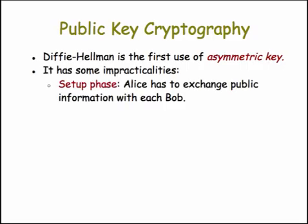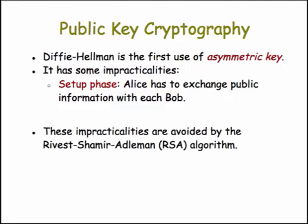It requires a setup phase in which Alice has to exchange some public information with Bob — not only with that Bob, but with any Bob she wishes to exchange a key with. These impracticalities are avoided by another algorithm: the Rivest-Shamir-Adleman, or RSA algorithm, which is the most widely used cryptographic algorithm.